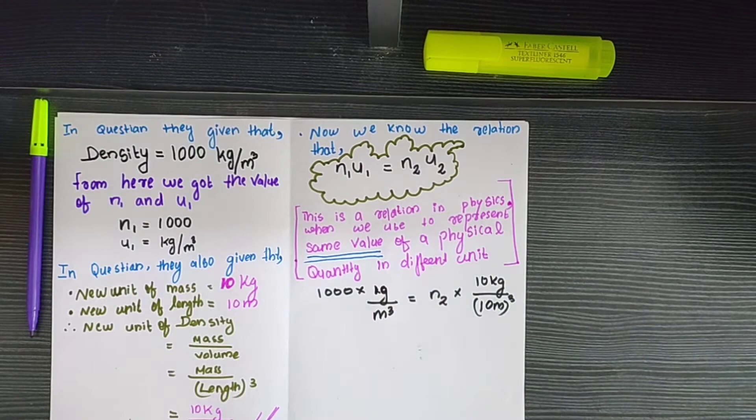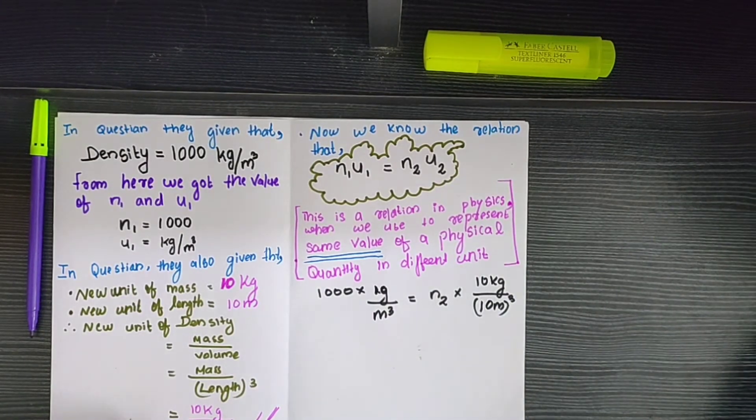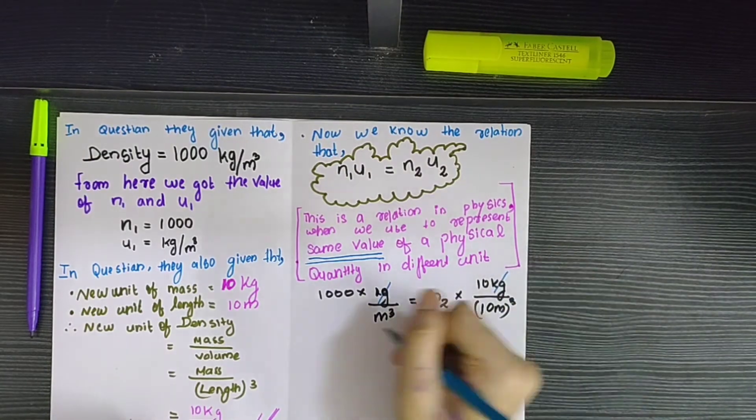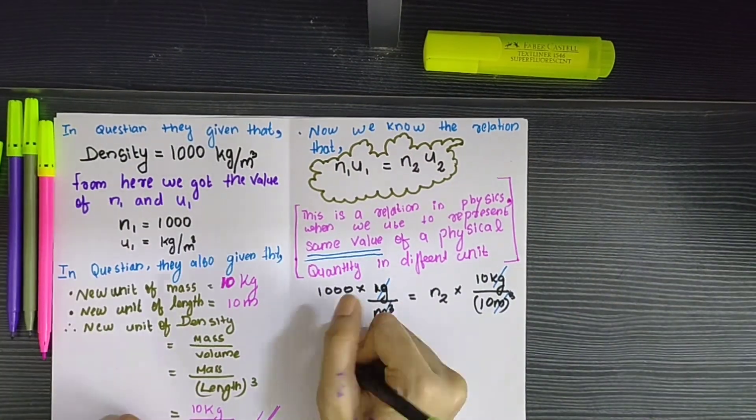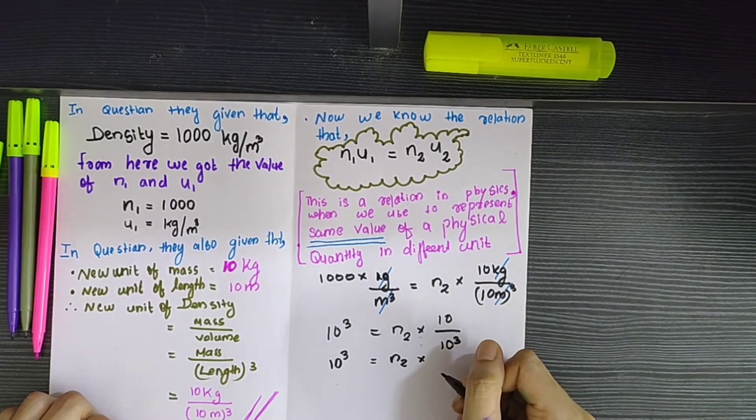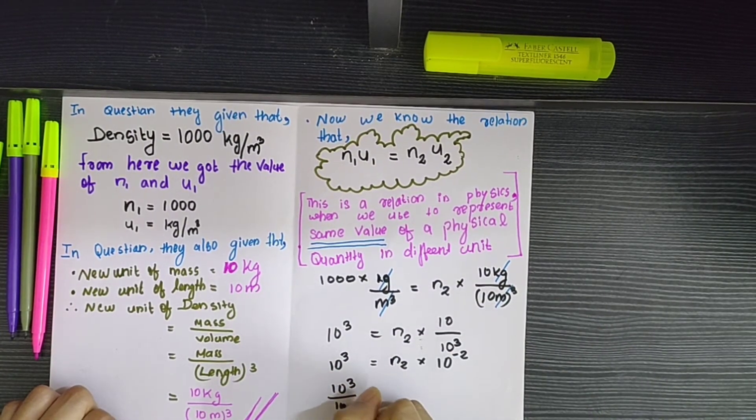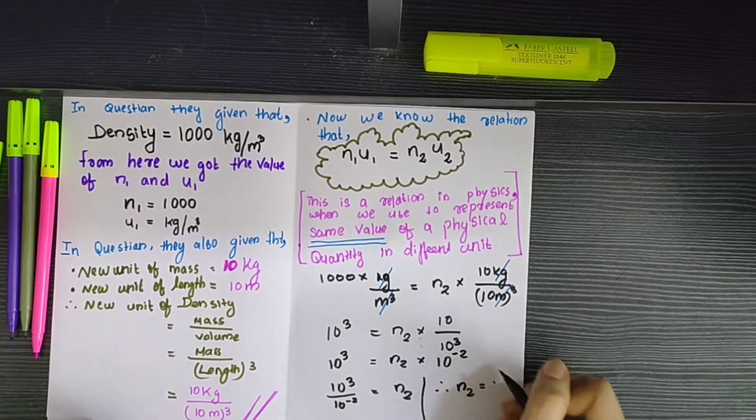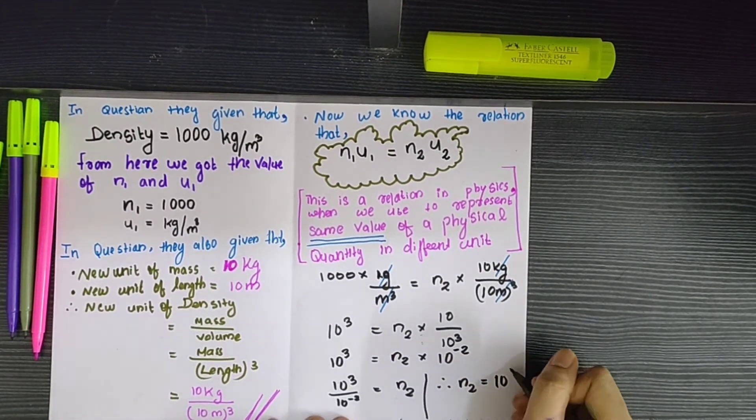The next step is to cancel out the kilogram and meter cubed on the left-hand side and also on the right-hand side. So after doing the further steps, we will get the value of n2, that is the numerical part of the density in unit system 2, as 10 raised to 5.